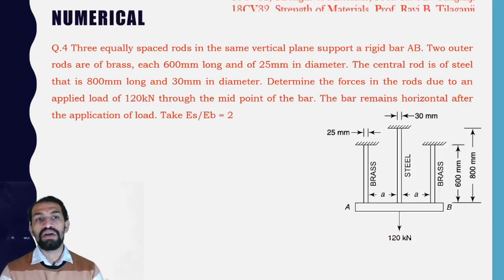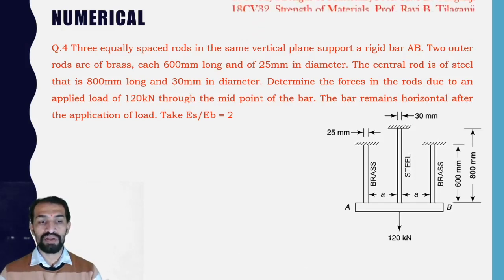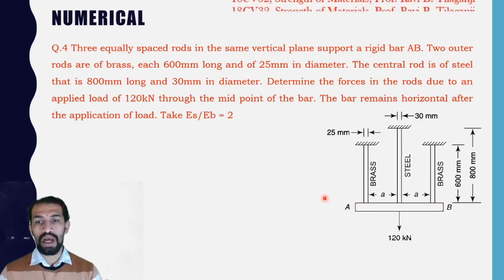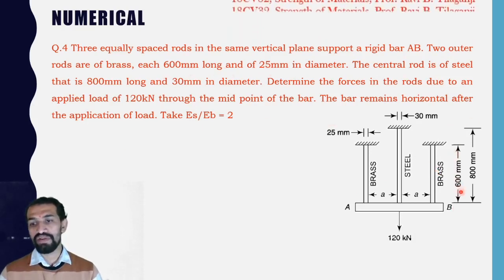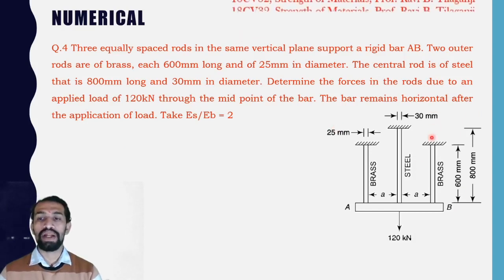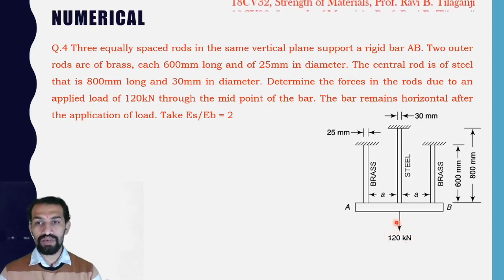The numerical question: three equally spaced rods in the same vertical plane support a rigid bar AB. Two outer rods are of brass, each 600mm long and 25mm diameter. The central rod is of steel, 800mm long and 30mm in diameter. Determine the force in the rods due to an applied load of 120kN through the midpoint of the bar.